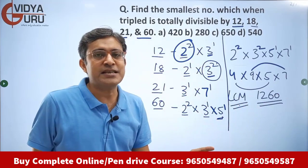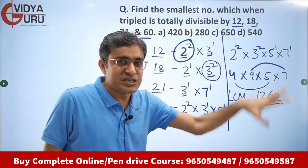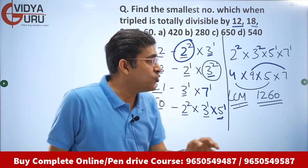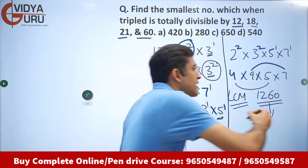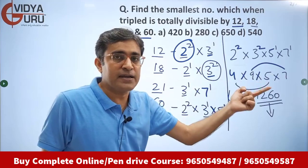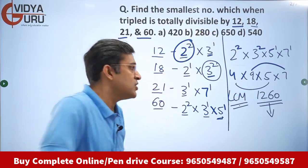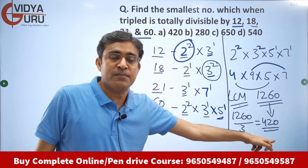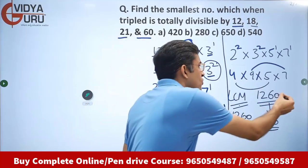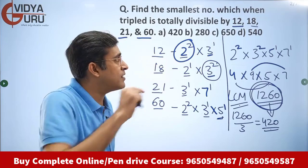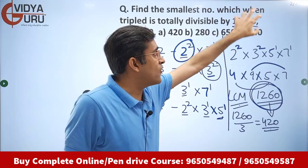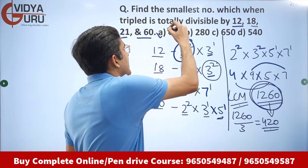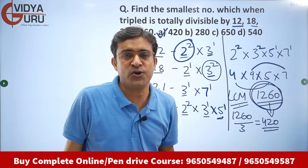But is 1260 the answer? No. 1260 is the smallest number completely divisible by 12, 18, 21 and 60. But you have to think of the number which becomes 1260 when you triple it. So divide 1260 by 3 and it gives you 420. So 420 is the number which when tripled gives 1260 — the smallest number which completely comes in the table of 12, 18, 21 and 60. The answer is 420.